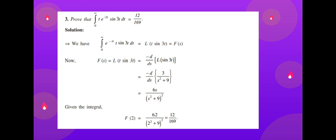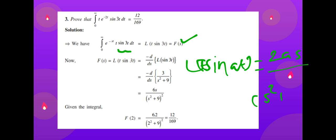For the integral from 0 to infinity of t·e^(-2t)·sin(3t) dt: this is the Laplace transform of t·sin(3t) evaluated at s = 2. Using L{t·sin(at)} = 2as/(s² + a²)², with a = 3 and s = 2, we get 2·3·2/(2² + 3²)² = 12/(4+9)² = 12/169. The final answer is 12/169.